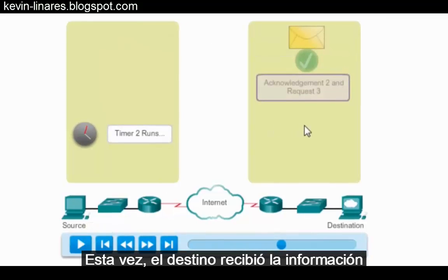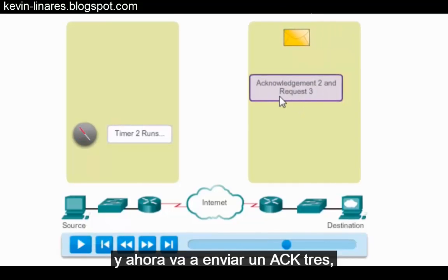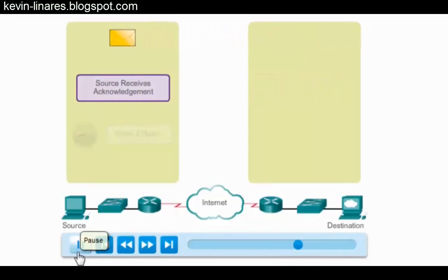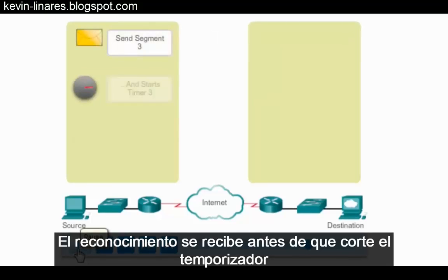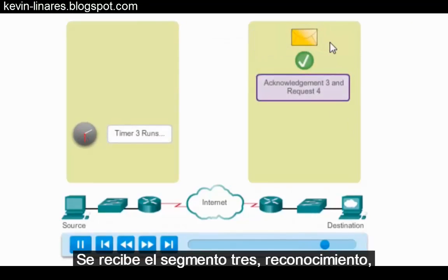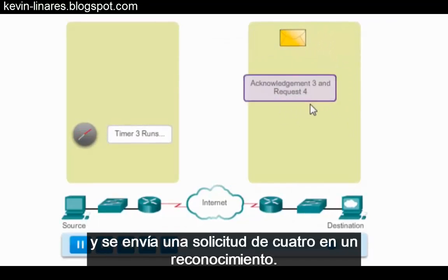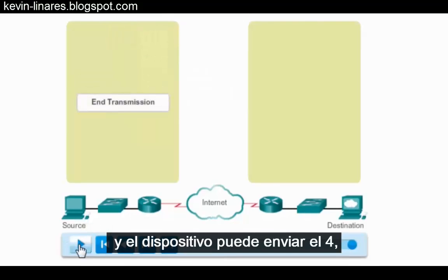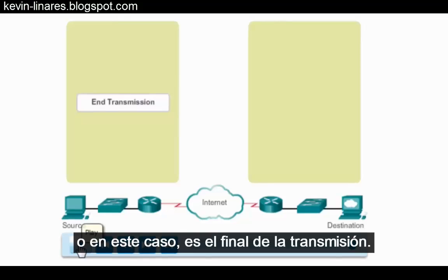The source host will retransmit segment 2 and restart the timer. This time, the information was received by the destination, and now it's going to send an ACK 3, requesting the next piece of data, which in this case would be number 3. The acknowledgement is received before the timer expires and segment 3 is sent. Segment 3 is received, acknowledged, and a request for 4 is sent in an ACK. The ACK is received before the timer expires and now the device can send segment 4 — or in this case, it's the end of the transmission.